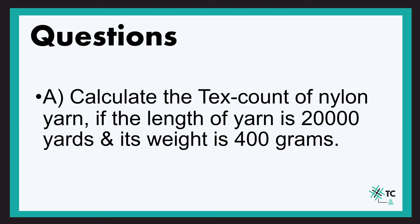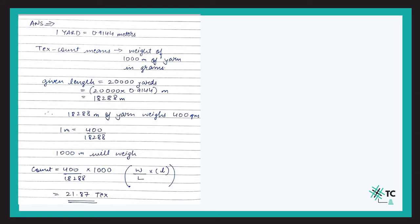Question A: Calculate the tex count of a nylon yarn if the length of the yarn is 20,000 yards and its weight is 400 grams. When solving any question on yarn count, be very particular about the units. One yard equals 0.9144 meters. We need the tex count, which means the weight of 1000 meters of yarn in grams. The given length of 20,000 yards converts to 18,288 meters.